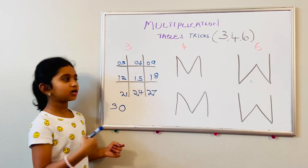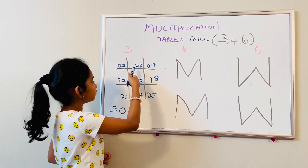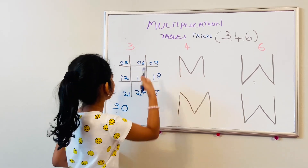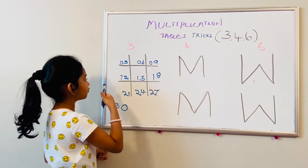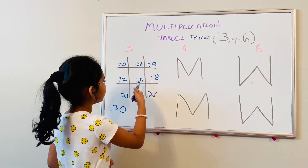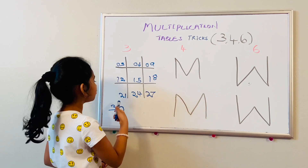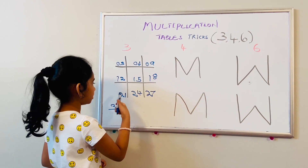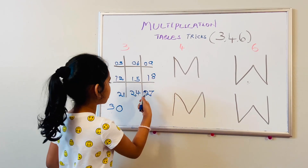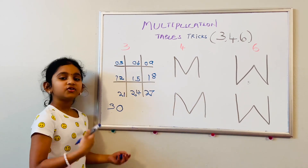Three ones are three. Three twos are six. Three threes are nine. Three fours are twelve. Three fives are fifteen. Three sixes are eighteen. Three sevens are twenty-one. Three eights are twenty-four. Three nines are twenty-seven. Three tens are thirty.